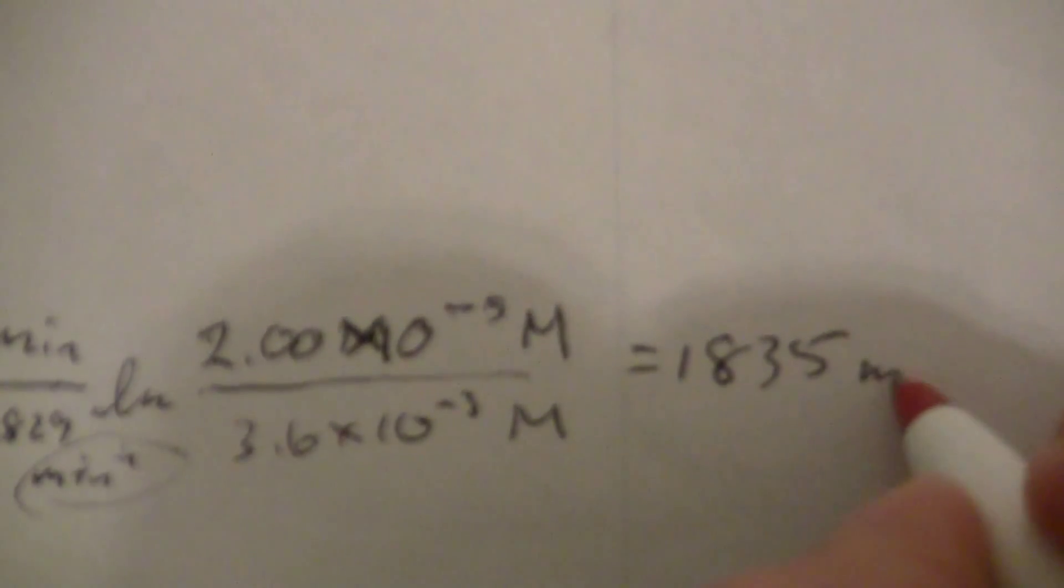So 1835 minutes, or we can take that number, divide by 60, and that will be 30.6 hours.